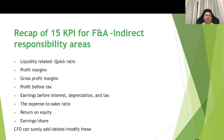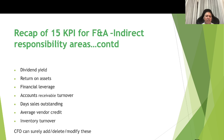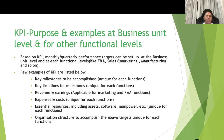The recap of 15 KPIs for indirect responsibility areas — where F&A performs an indirect role — includes: liquidity ratios, quick ratios, profit margins, gross profit margins (considered indirect because profit is mostly driven by sales, finance, and purchase or contract functions), profit before tax, EBIT, expense-to-sales ratio, return on equity, earnings per share, dividend yield, return on assets, financial leverage, accounts receivable turnover, days sales outstanding, average vendor credit, and inventory turnover. The CFO can transfer any of these to direct responsibility areas at their discretion.